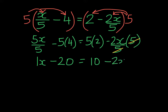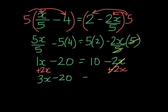We continue solving. We can do an inverse operation of adding 2x to both sides. On the right-hand side, the x's disappear. We are left with 3x on the left-hand side, take away 20, equals 10. Our next inverse operation would be to add 20 on both sides.